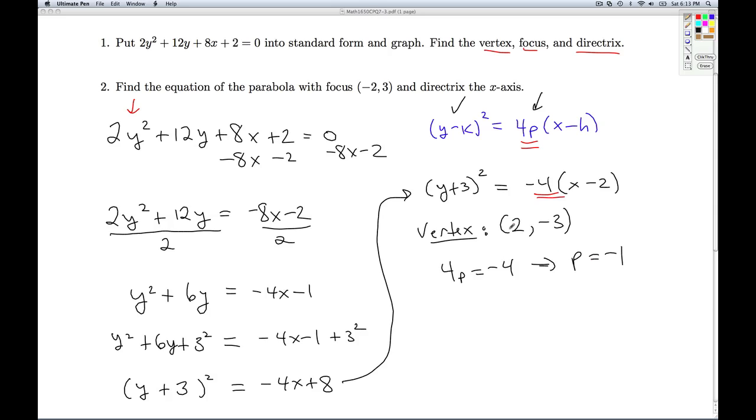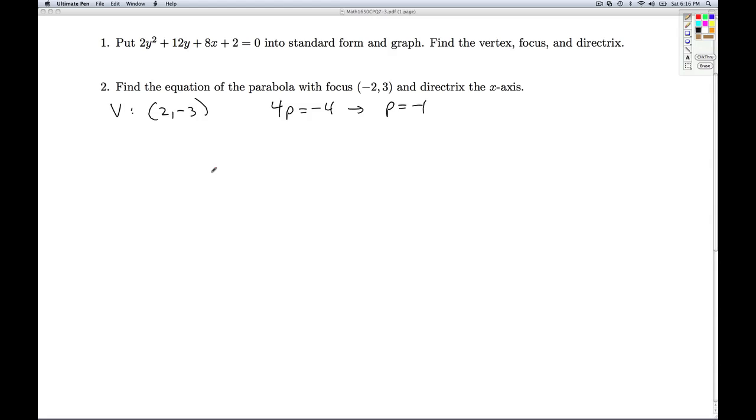Since p is negative, and I have a y squared, that tells me the parabola is going to open to the left, which means the focus is going to be p units to the left of the vertex, and the directrix is going to be p units to the right of the vertex. So let's go ahead and graph it. The vertex is at 2, -3.